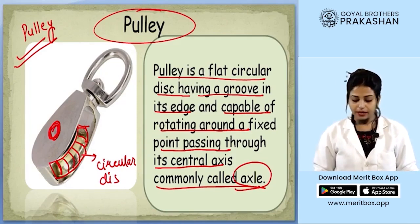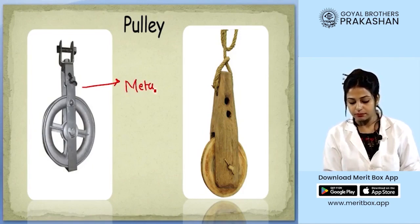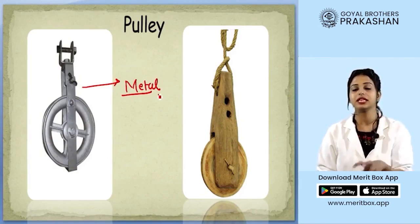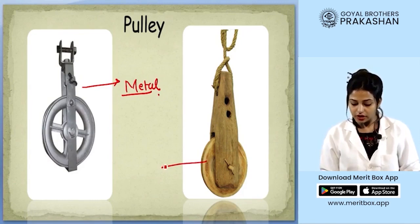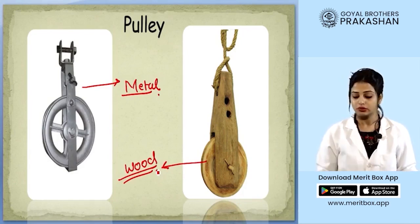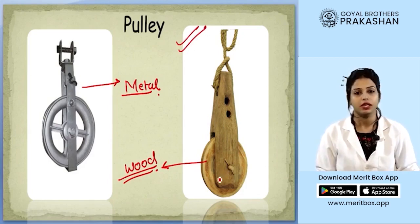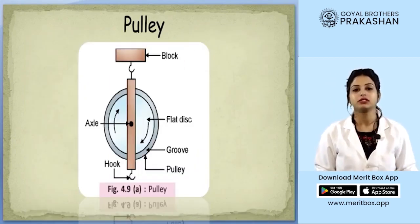Pulleys can be made from different materials. Generally pulleys are made from metals, but when simple machines were first put into use, they were made of wood. Even today in villages, when someone has to draw water, they use such pulleys to help them, and those pulleys can be made out of wood.